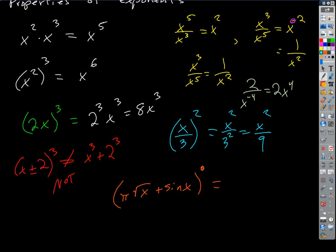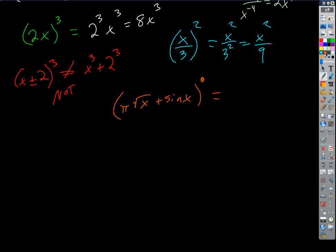I want to close with a really tough one. The quantity pi times the square root of X plus sine X, that whole quantity to the 0 power, is 1 — because any base to the 0 power is 1. The only exception is 0 to the 0, which is an indeterminate form in math.